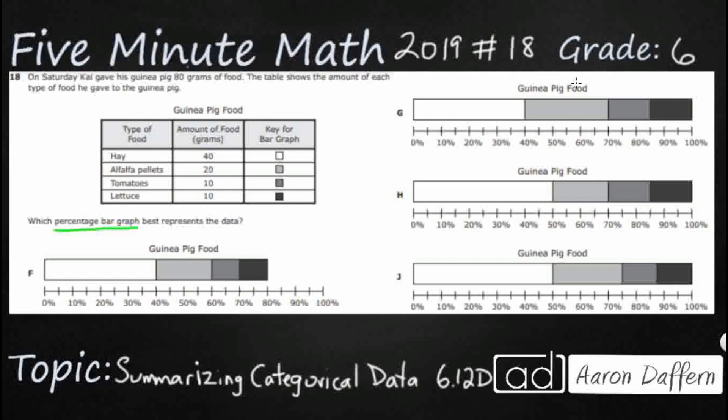One thing we need to remember about our percentage bar graph is that any time you get a percentage bar graph, it always equals 100% because it is a percentage of the whole. So 40 plus 20 plus 10 plus 10 is going to make 100% and we are looking for which one is going to meet that.